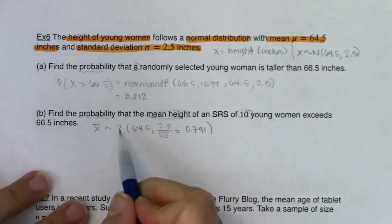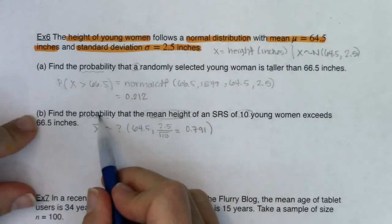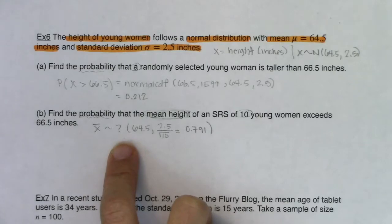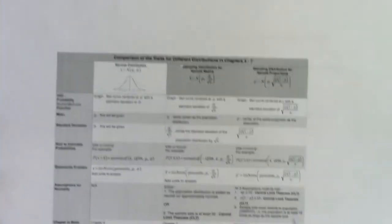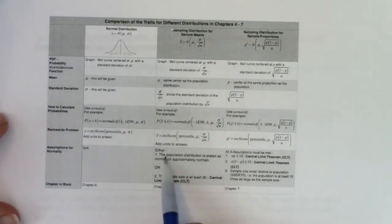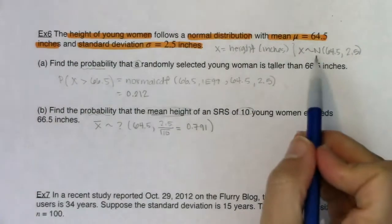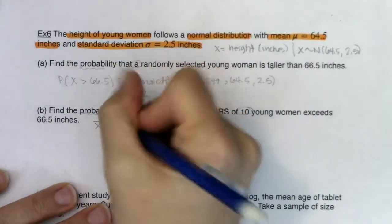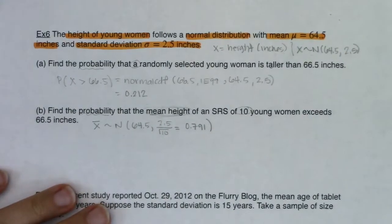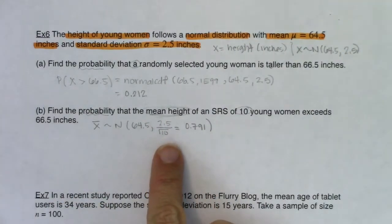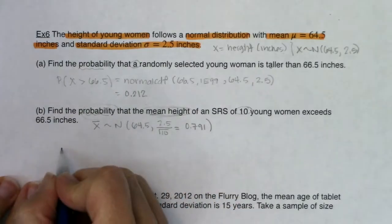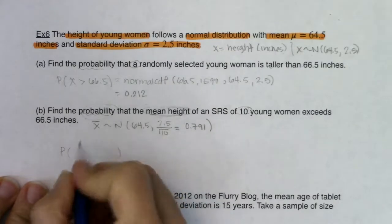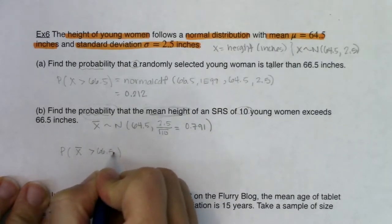The big question: can I put the n here and use normalcdf? To get normality for x-bar, one of two assumptions must be met. Was the population stated as normal? Yes — so since the population distribution was stated as normal, I can automatically use normalcdf. That's good because the sample size of 10 is not large enough for the CLT to kick in. So: P(mean height exceeds 66.5).